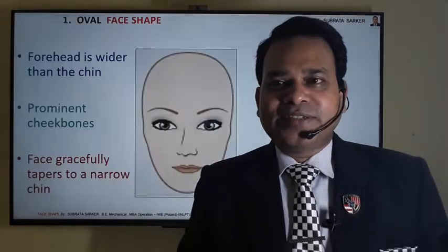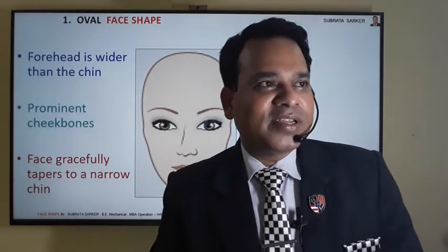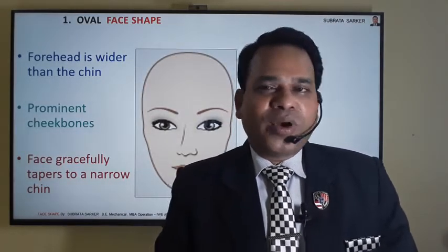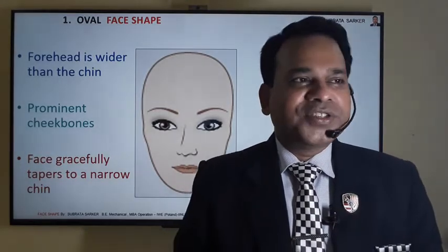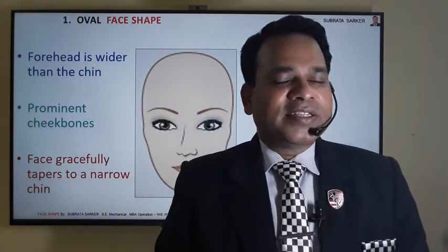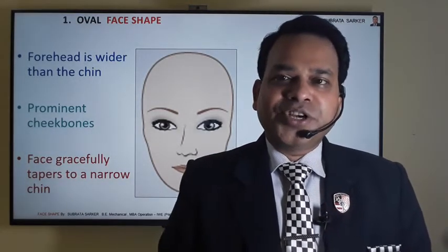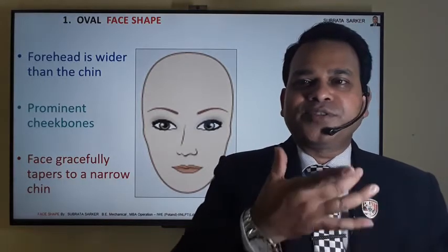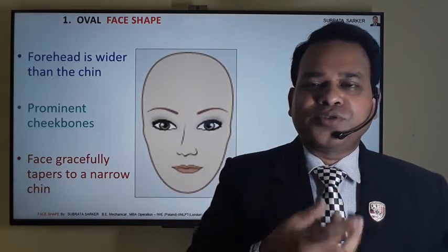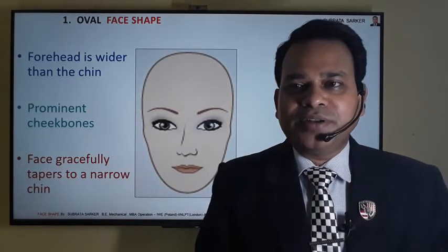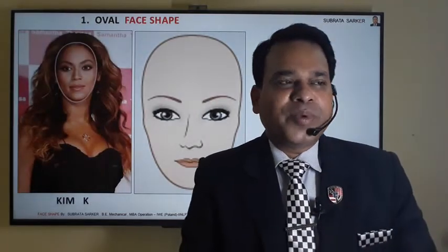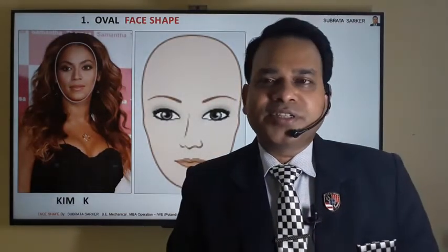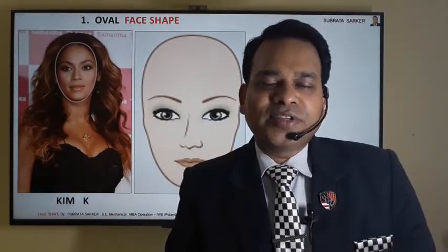There are six types of face shapes. One is the oval face shape, where the forehead is wider than the chin, prominent cheekbones are there, and the face is gracefully tapered towards the chin. An example is Kim K, the supermodel — she has an oval face shape.